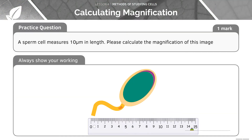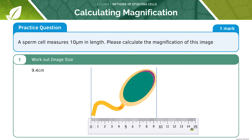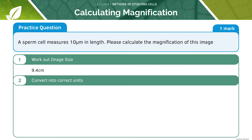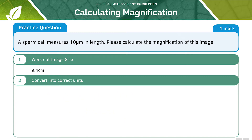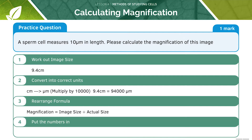Let's have a go at this question — pause the video now to have a go at it by yourself before we go through it together. The answer is shown here. The first thing we have to do is work out the image size, which is 9.4 centimetres. Now we must convert into the correct units, so we would do 9.4 multiplied by 10,000 to give us 94,000. Now we need to rearrange the formula to give us: magnification equals image size divided by actual size. Next we can put the numbers into our equation.